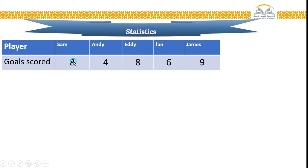For example, Sam, he put eight goals. Andy, four goals. Eddie, eight goals. But Ian, six goals. And James, nine goals.